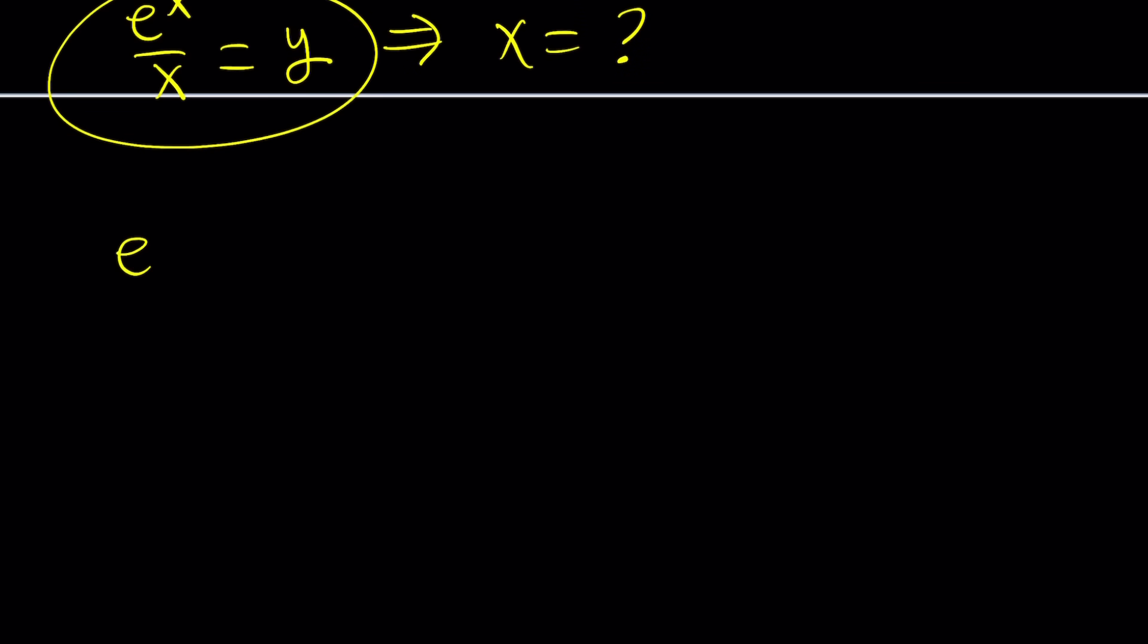We're going to start with this equation, e to the x divided by x equals y. And again, our goal is to solve for x. So for that purpose, first of all, I want the x to be in the numerator, not denominator. Make sense?